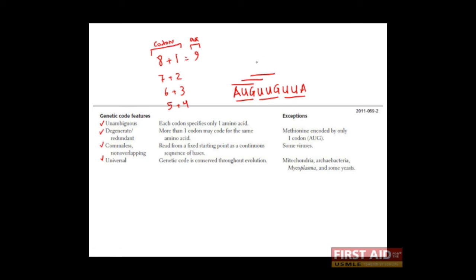Some viruses, however, when they read their RNA transcripts, can do this. They can read in overlapping parts. But most all other organisms read their RNA transcripts in non-overlapping sequences.